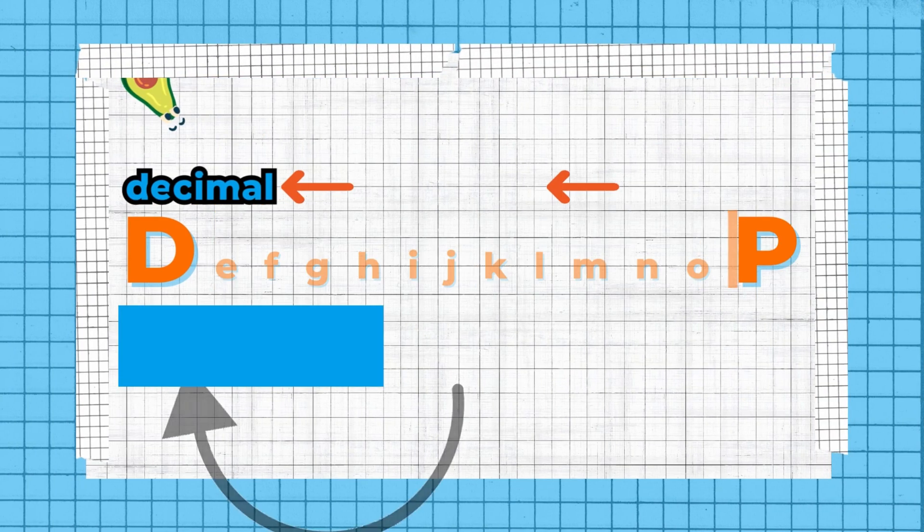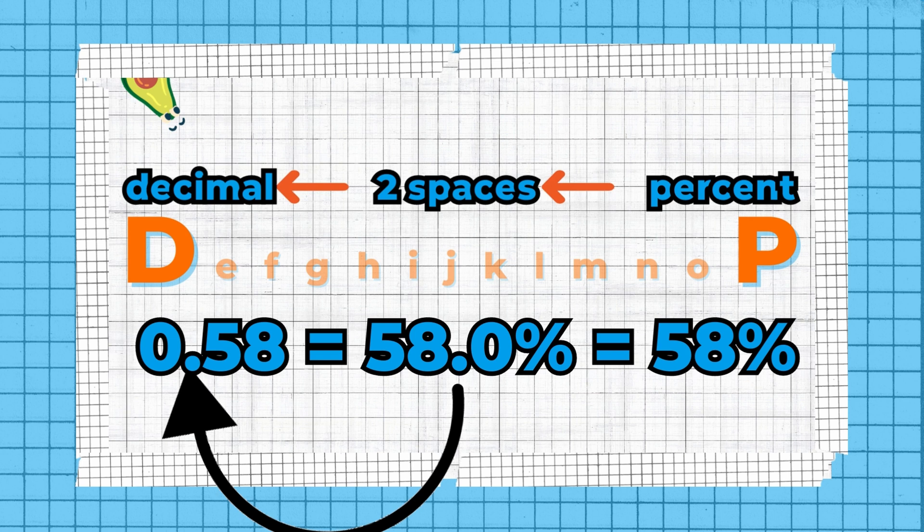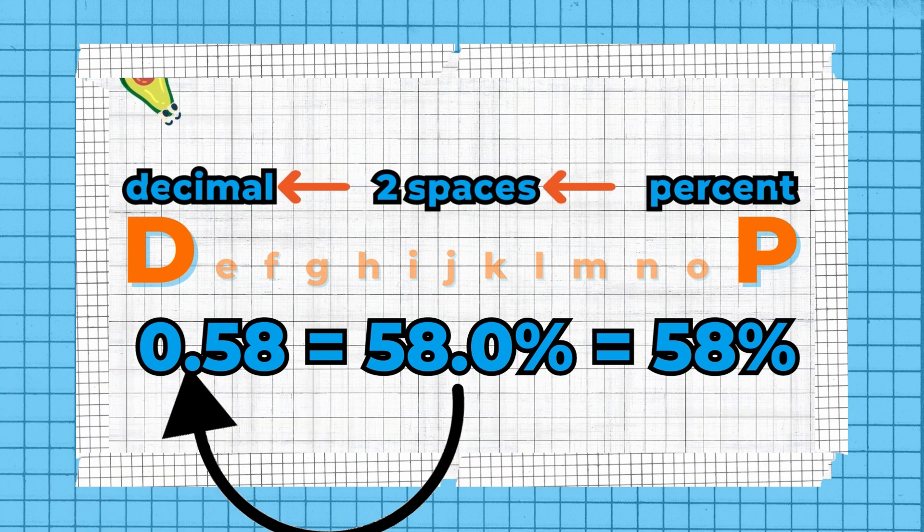So what does that mean? If you want an easy way to remember which way to move the decimal, if you go from a percent to a decimal, you're going to move the decimal place two spaces to the left. Look at it on the alphabet. P comes after D. So go left to get to D.